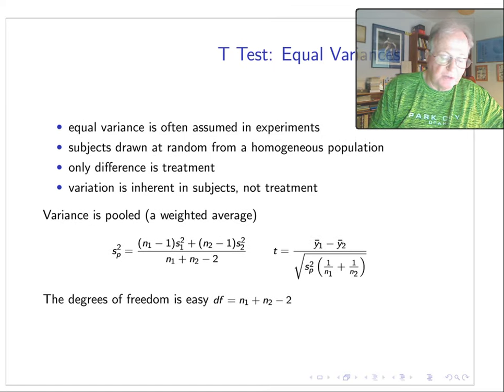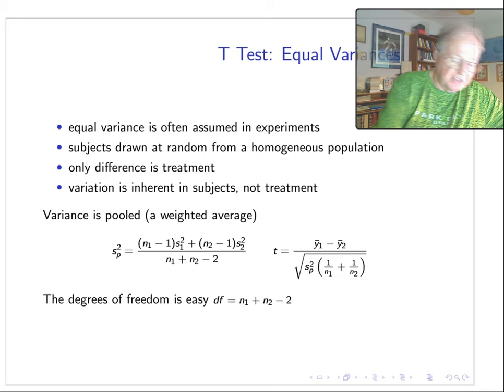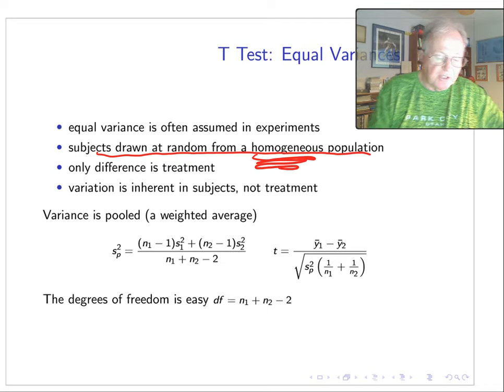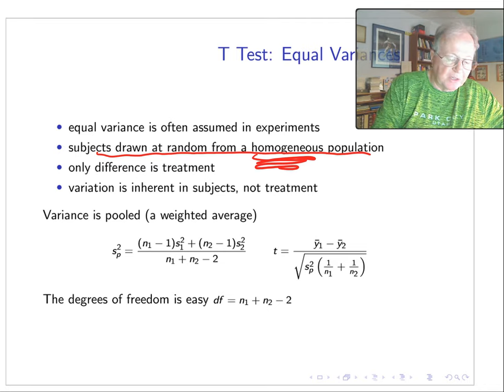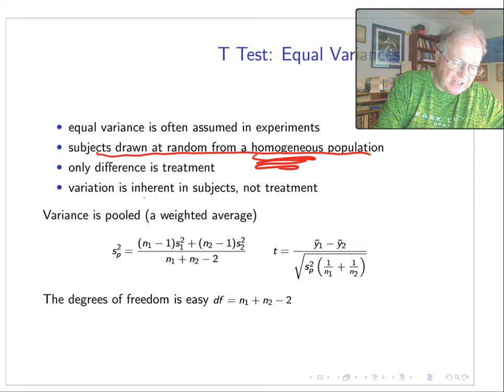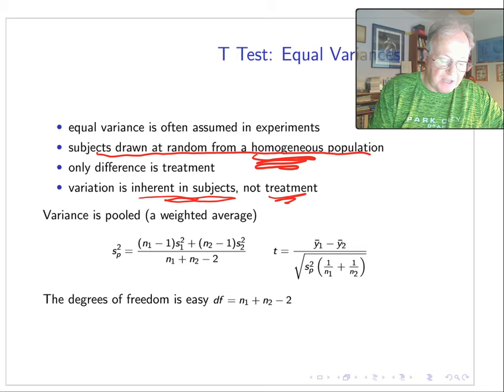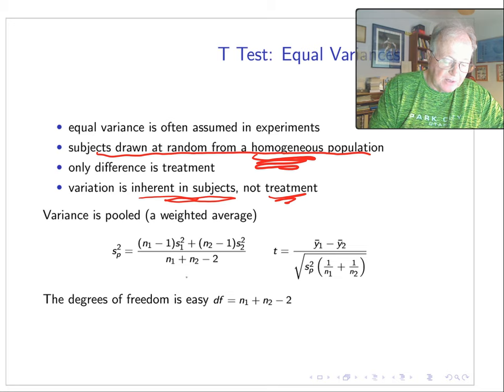So let's talk about the one with equal variances. Equal variance is often assumed in experimental settings since the subjects are drawn at random from a homogeneous population, so the only difference is the treatment. We're going to assume that variation is inherent in subjects, not in the treatment.